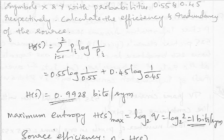So we have the entropy of the source H(S) as summation i equals 1 to 2, 2 here because we have X and Y, two symbols. Pi log to the base 2, 1 by Pi.